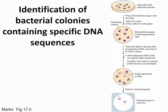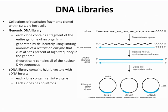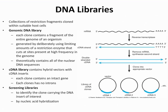DNA libraries are collections of cloned fragments. The genomic DNA library contains cloned fragments from an entire genome, generated using limited amounts of restriction enzymes — theoretically containing all nuclear DNA sequences. The cDNA library contains hybrid vectors with cDNA inserts, where each clone contains an intact gene with no introns; cDNA stands for complementary DNA. Screening libraries allows you to identify a clone carrying the DNA insert of interest using nucleic acid hybridization.